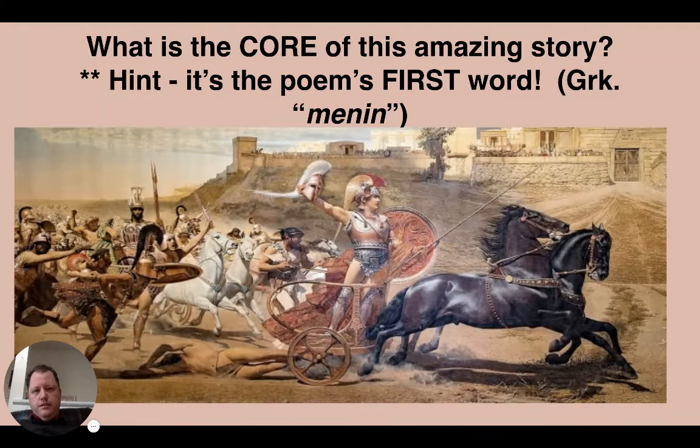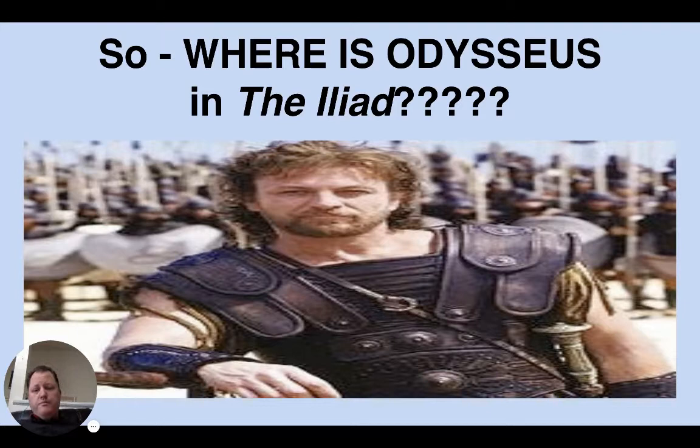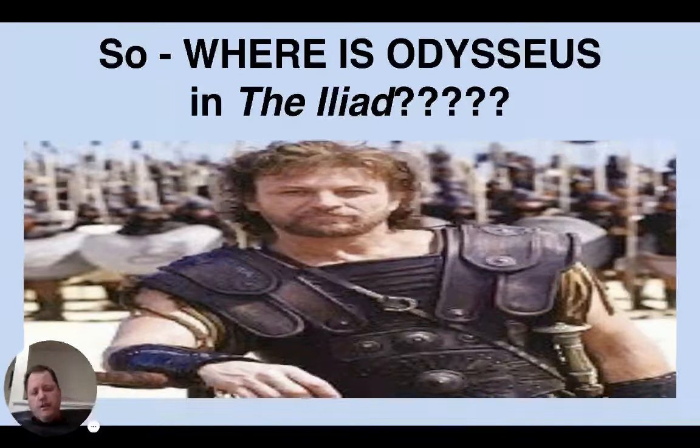Odysseus, the center of the poem The Odyssey, is a minor character in the Iliad. We learn in the poem The Aeneid, written by the Roman epic poet Virgil, about the Trojan horse and the resolution of the war. The Trojan horse was Odysseus' idea. He's a very different sort of military man than Achilles, and Odysseus is not super significant in the Iliad.